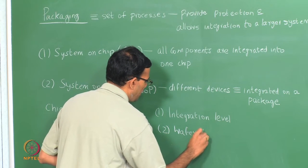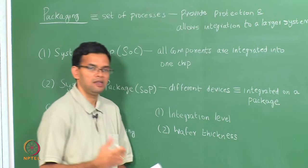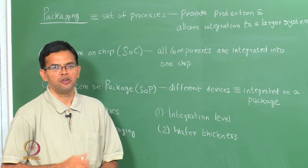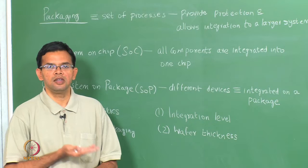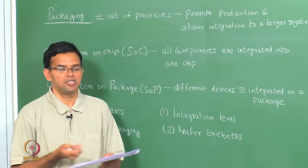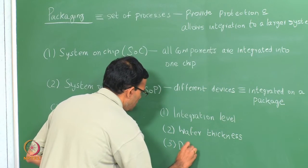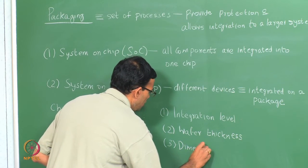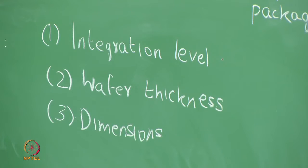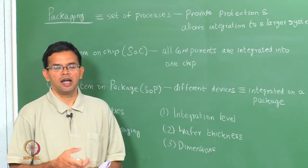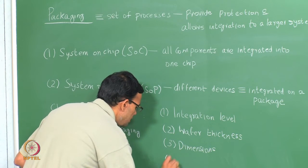The wafer thickness: later we will look at the various steps in the packaging process, and one of them is to actually thin the wafer down. You start with a wafer that is typically 700 microns thick and it is thinned down to a few hundred microns so that packaging becomes easier. Then the dimensions: dimensions refer to how many leads you can have and how closely spaced these are. This is related to the die size and to the type of chip you have.